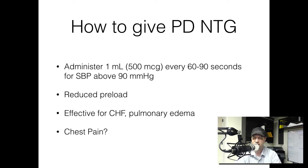Give that every 60 to 90 seconds. This has a faster onset than the tablets, which makes sense because you're giving it intravenously. When you're giving this drug, you want to try and take blood pressures in between each administration, just like you would with sublingual nitroglycerin — every 60 to 90 seconds. Check the lung sounds and make sure all the pulmonary edema is gone.